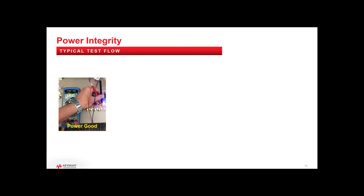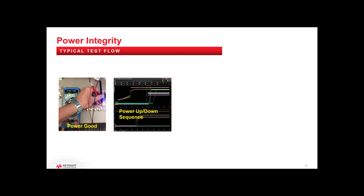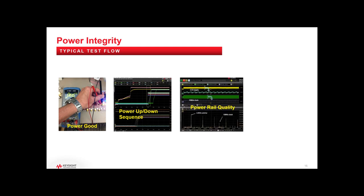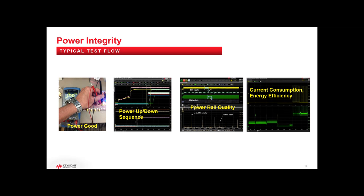The typical test flow when you get a board: first, pull out a multimeter and check that supplies are approximately where they should be. Then go through power up and power down sequencing hundreds or thousands of times — for high reliability products sometimes tens of thousands of times, which is very time consuming. Once convinced the sequencing is performing correctly, then and only then enable the rest of the system and look at power quality, current consumption, and energy efficiency.